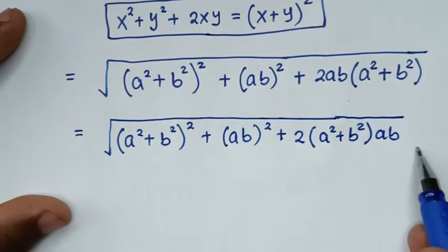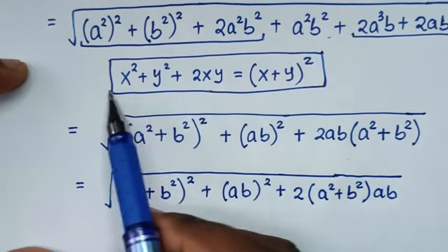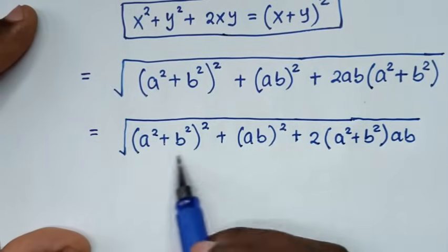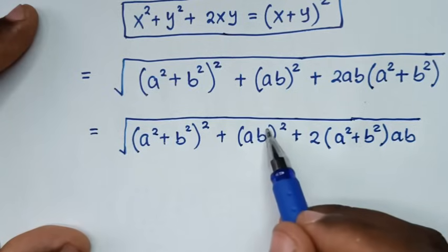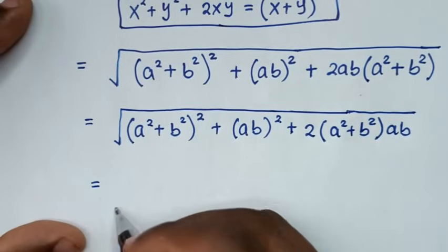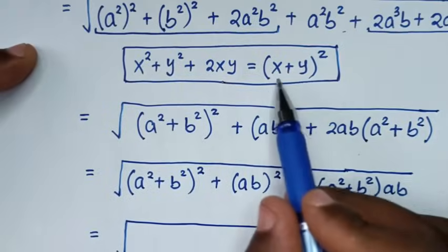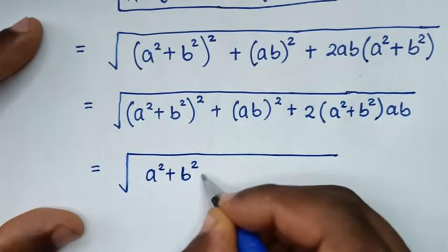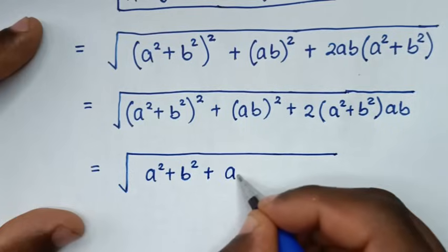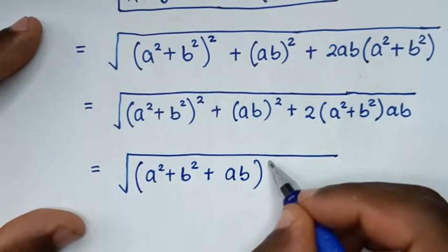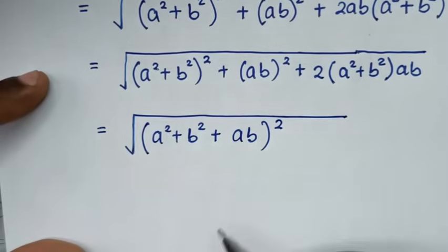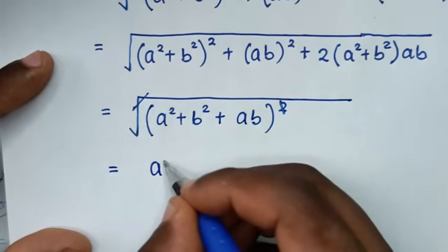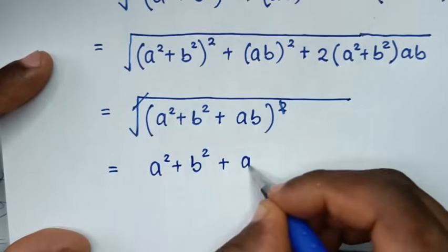So it will be equal to square root of (a²+b²)² + (ab)² + 2(a²+b²)(ab), which is again in the form (x+y)² with x = a²+b² and y = ab. So it becomes square root of (a²+b²+ab)². The square root cancels the square, giving a² + b² + ab.